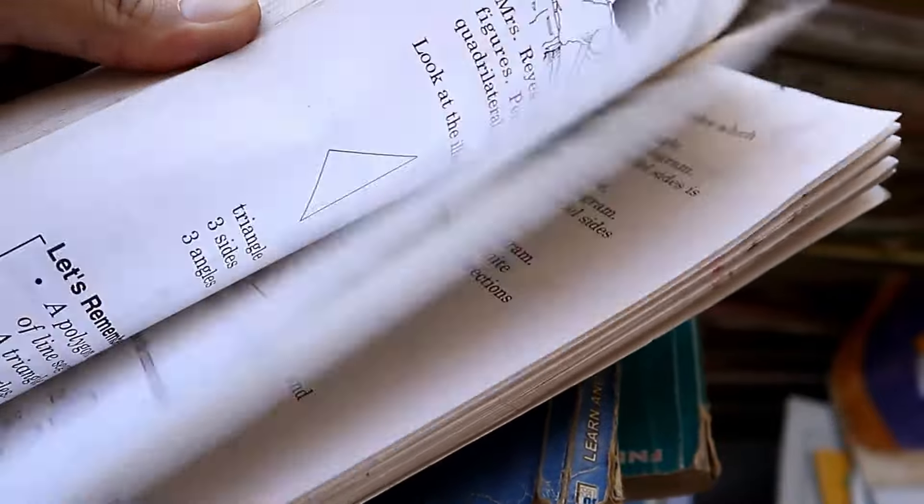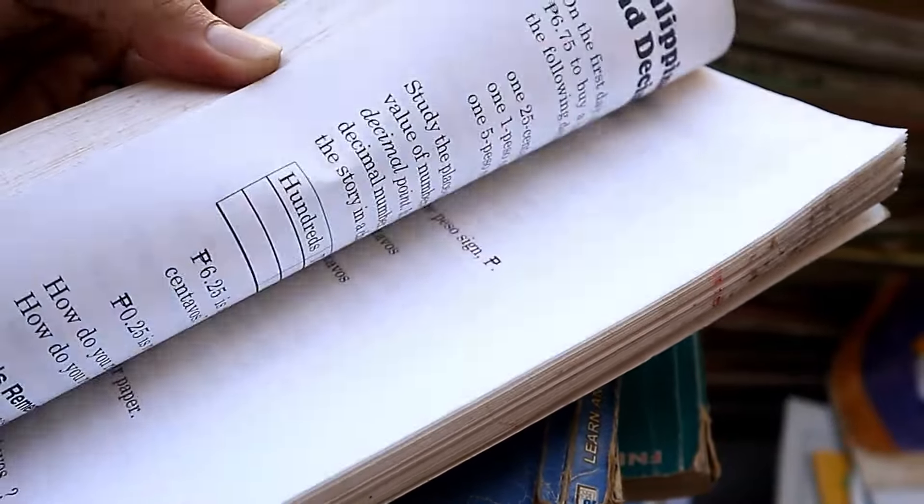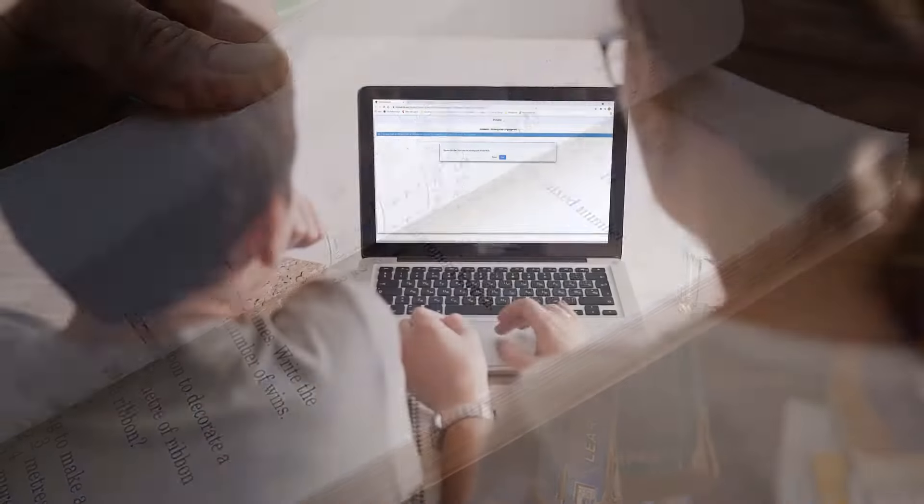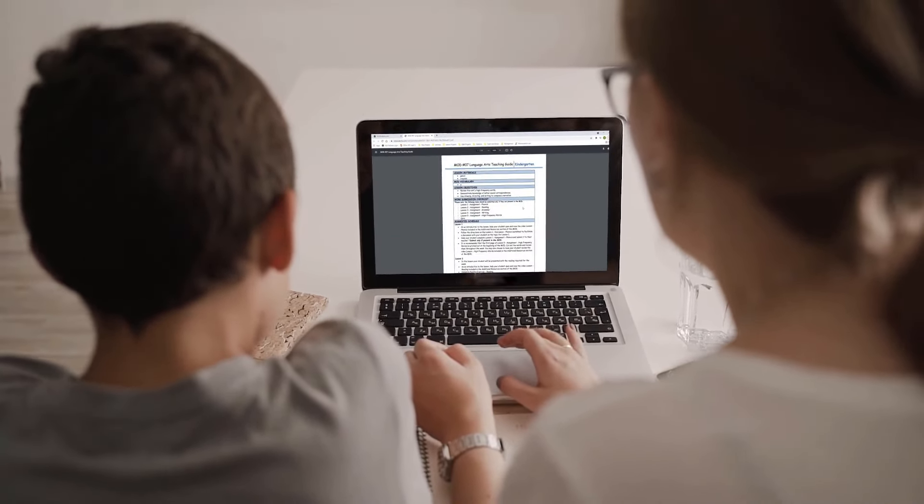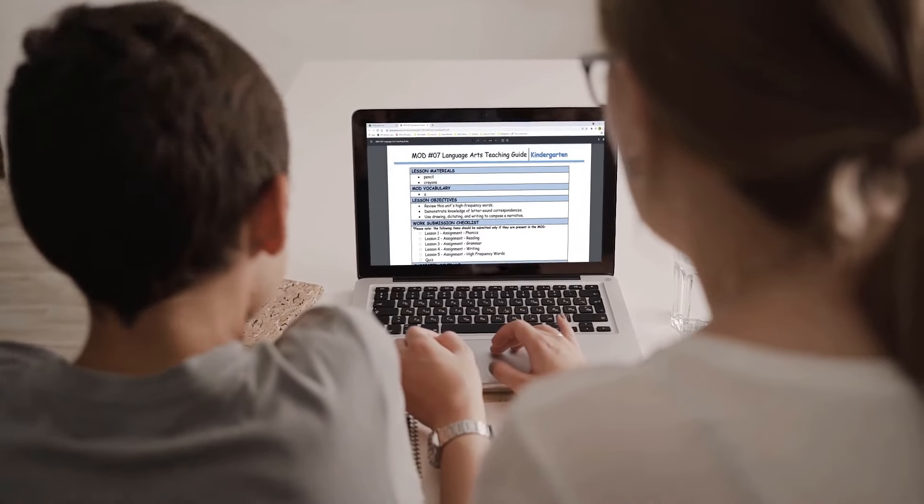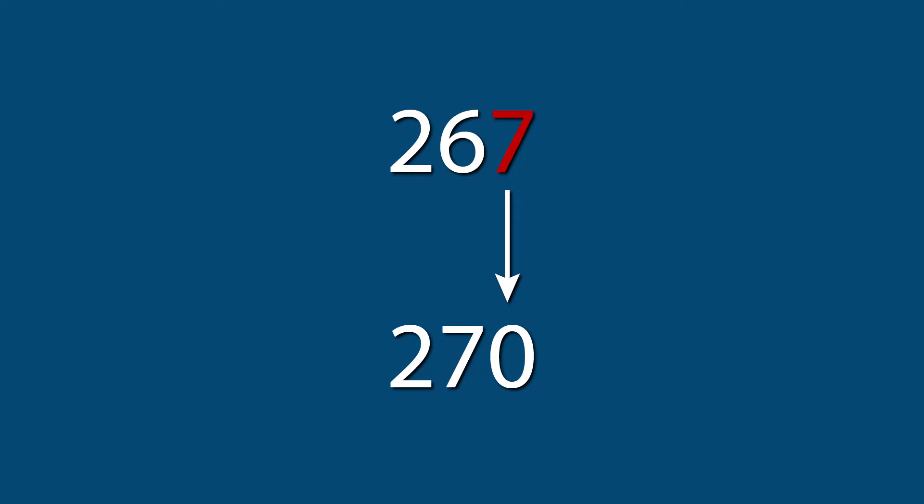This math writing question is an excellent opportunity to review materials. If you don't remember how to estimate, review the lessons and reading. Recall that numbers can be rounded up or down. If the number in the place you are using to round ends in 5 or above, round up. If it ends in 4 or below, round down.